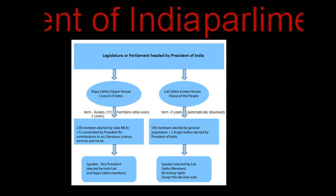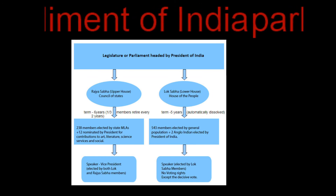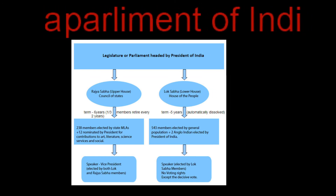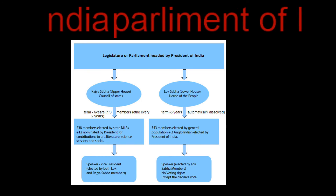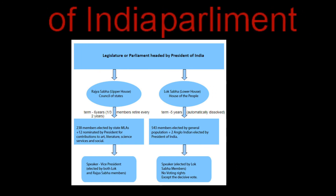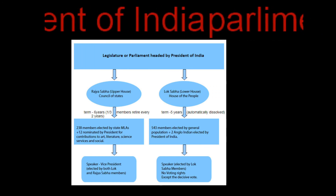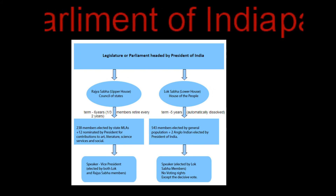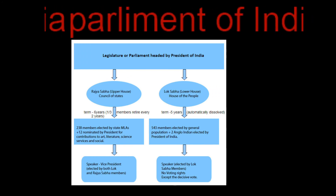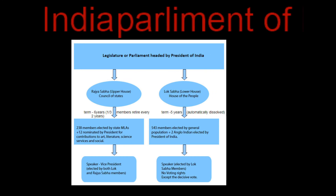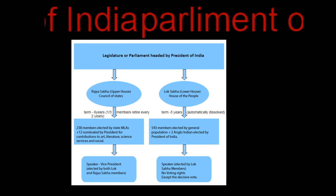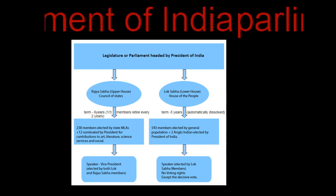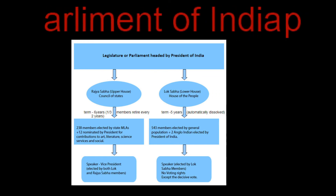The Lok Sabha consists of 543 members. In 543 members, 530 members are directly elected by the people of India through universal adult franchise. The other two members are nominated by the President of India, considering the Anglo-Indian members.